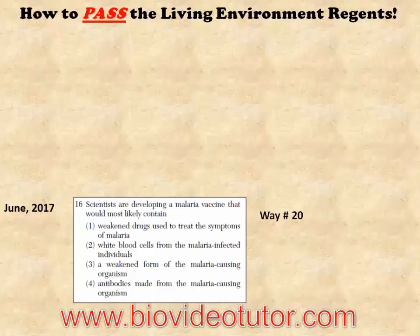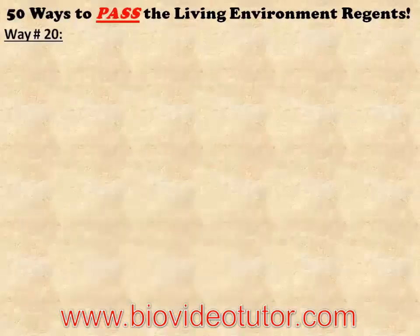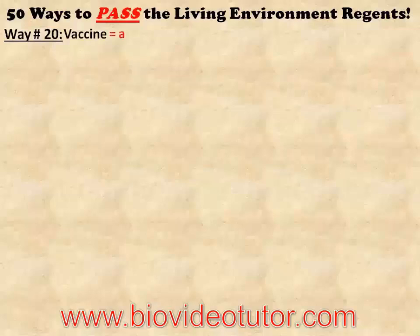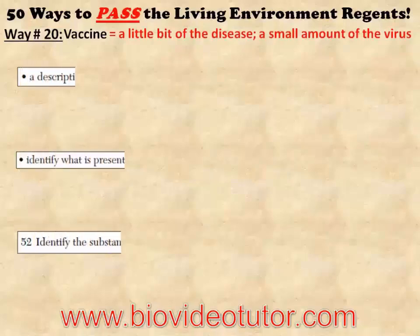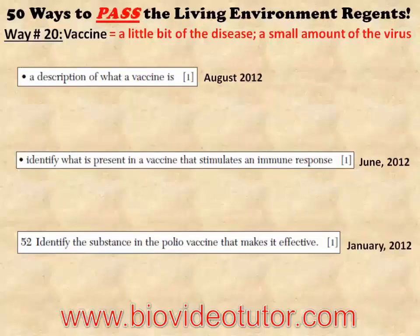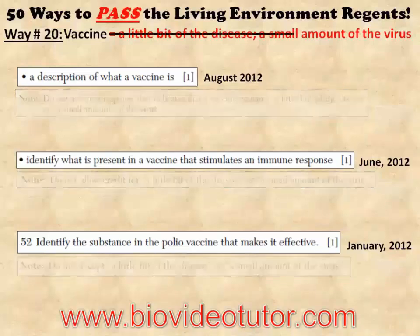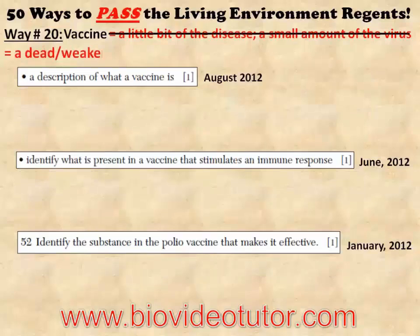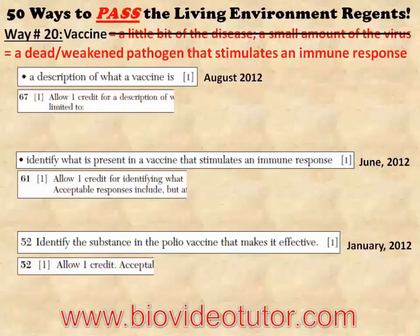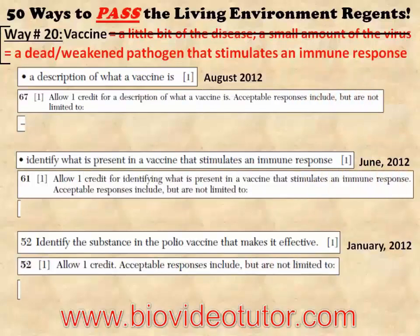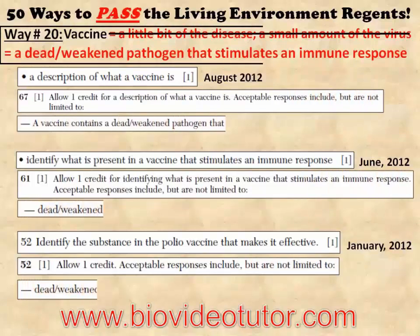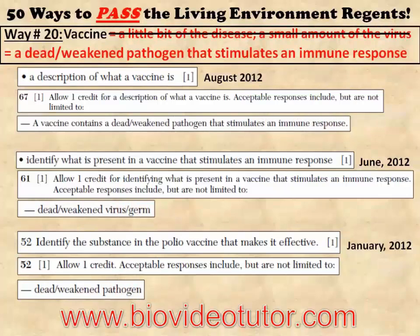Way number 20 on how to pass the Living Environment Regents. A lot of students tend to think that a vaccine contains a little bit of the disease or a small amount of the virus. But when asked to describe what a vaccine is on three different Living Environment exams, the answer key specifically said not to accept those answers. Instead, write: a dead or weakened pathogen that stimulates an immune response — that was the number one answer listed in those same answer keys.